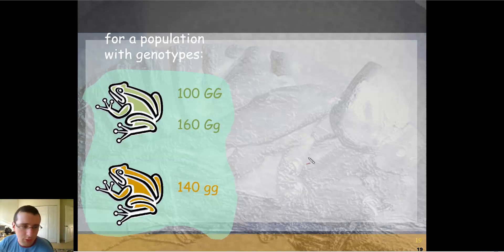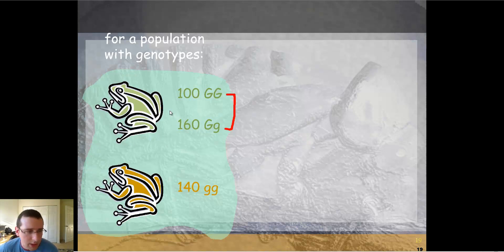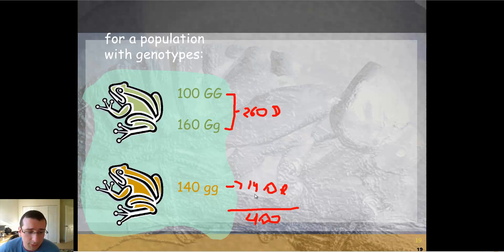Let's do yet another example. This time I'm giving you the genotype frequencies directly. Notice that these two genotypes show complete dominance, so both homozygous dominant and heterozygous will make the organism look green. There are a total of 260 organisms that look dominant and 140 that look recessive, making the total population 400. Dividing 260 by 400 gives the frequency of the dominant phenotype, and 140 by 400 gives the frequency of the recessive phenotype.